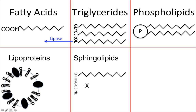A phospholipid is a phosphate head group with two fatty acid chains coming off of it. Then there's a lipoprotein — the name tells you what's in it: it's a lipid plus a protein, and they form these balls made up of phospholipids and proteins. A sphingolipid is kind of like a triglyceride, but the main difference is that the backbone for a triglyceride is glycerol, whereas the backbone for a sphingolipid is called sphingosine.